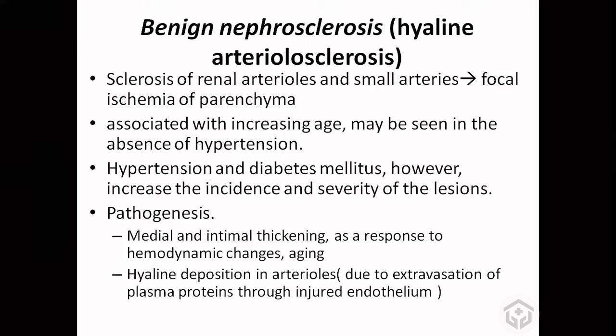Benign nephrosclerosis is common. Most of the time if you do a post-mortem, you will see some sclerosis of the arterioles of the kidney. This is due to the aging process. In the arterioles or small arteries, there is thickening of the intima and media. With aging, many people develop hypertension, causing hemodynamic changes — too much pressure in the vessels.